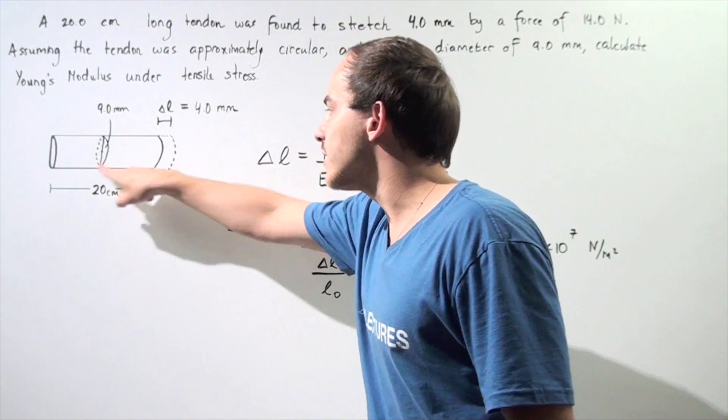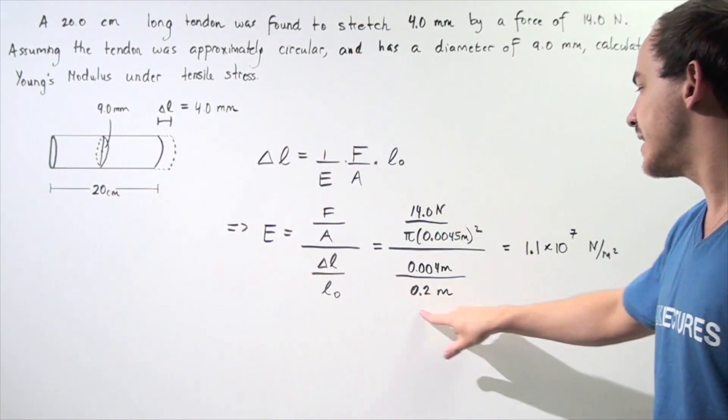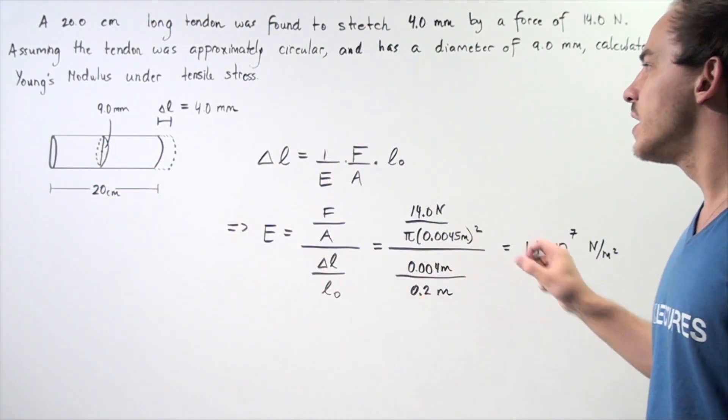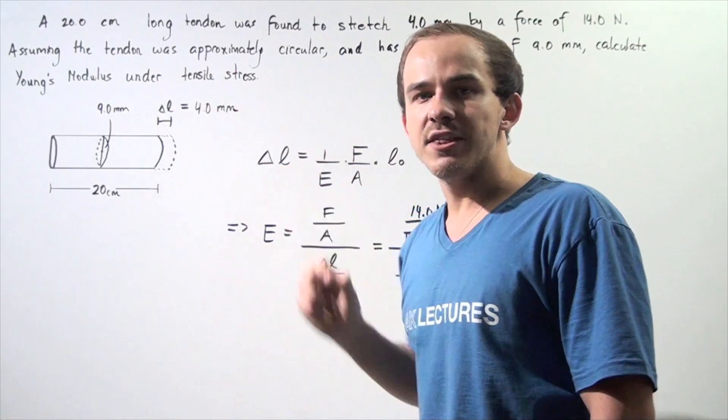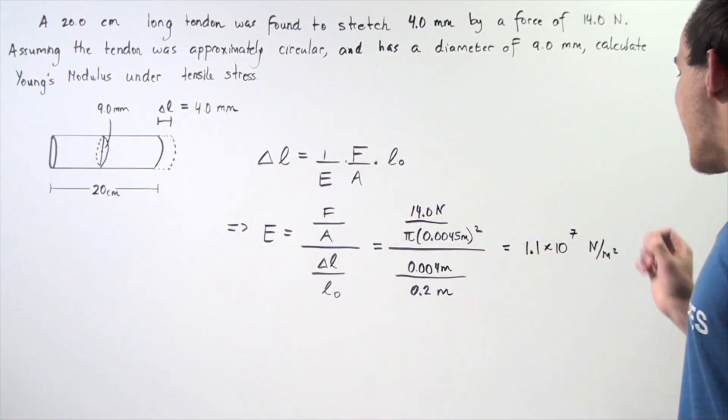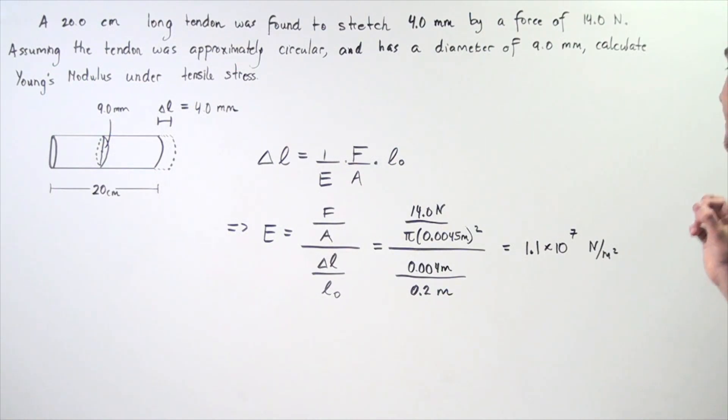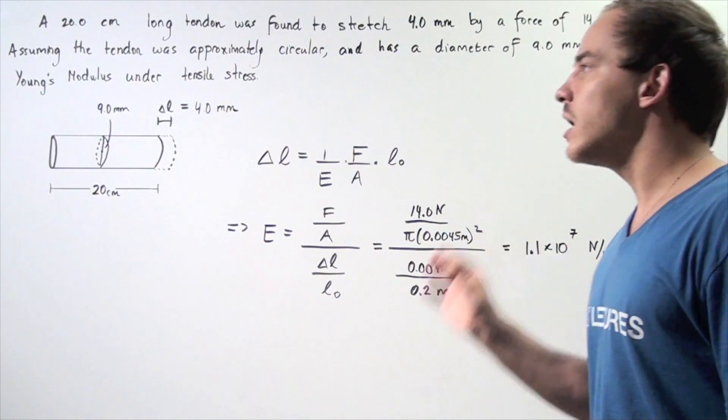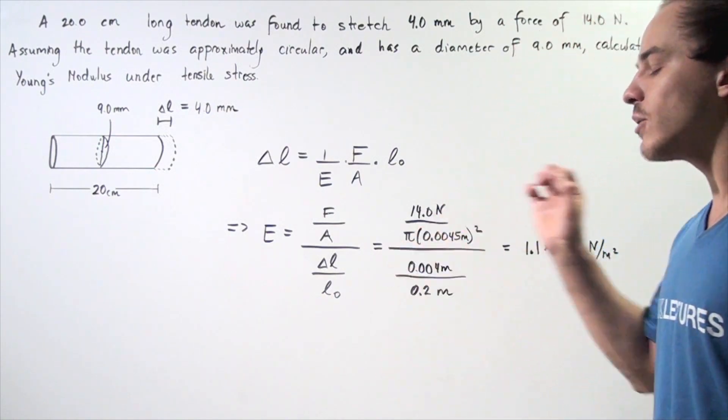We simply take this quantity and divide that by 100 to get this, and to get the top, we simply take 4 and divide that by 1,000. Now, we calculate this and we get a value of 1.1 times 10 to the 7 newtons per meter squared as Young's modulus of our tendon.